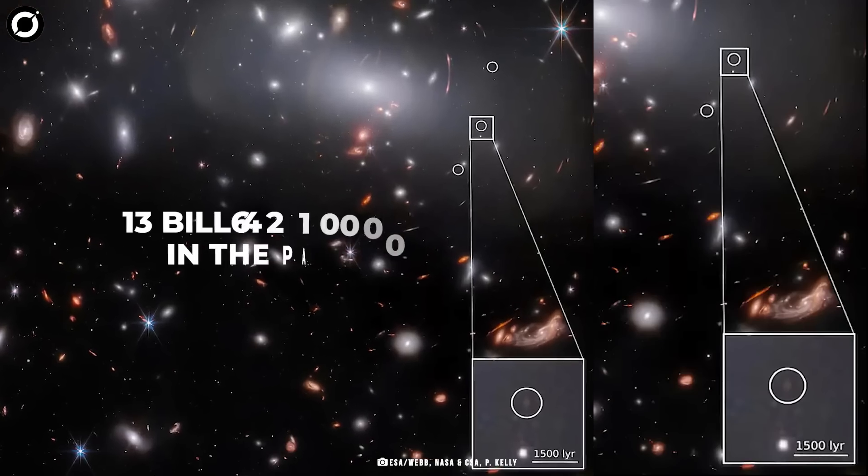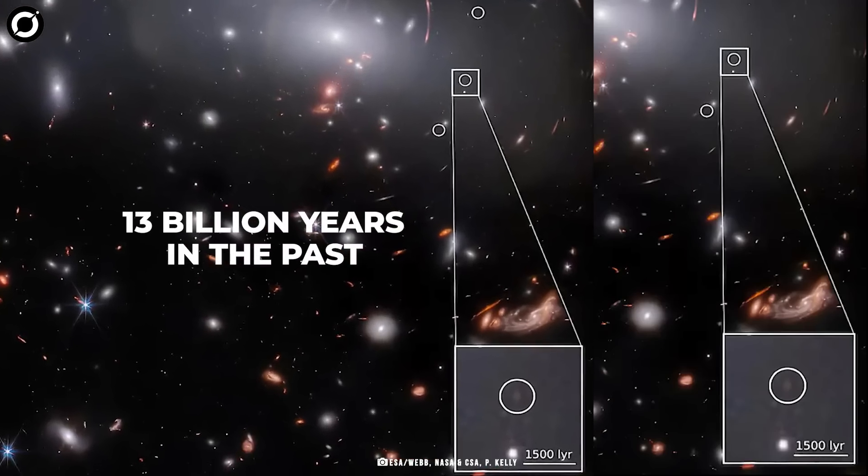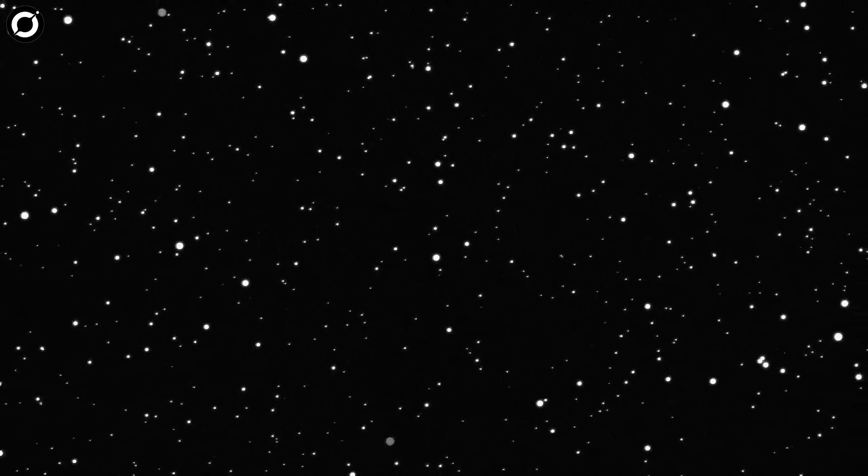Recently, the James Webb telescope also discovered a minuscule galaxy 13 billion years in the past that has given rise to new stars at an exceptionally high rate for its tiny size. It is said to be the smallest galaxy ever discovered at this distance.